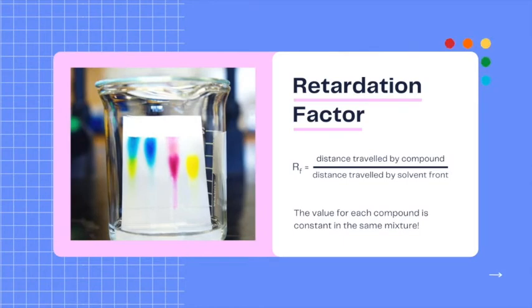So, the molecules in the mixture can actually be identified by their RF or retardation factor values. The retardation factor is equivalent to the distance traveled by compound divided by the distance traveled by the solvent front. This value can be used as a comparison to identify unknown compounds in a mixture.